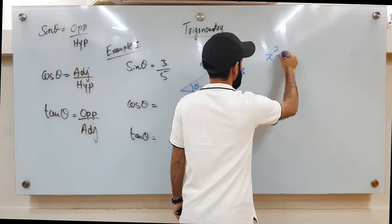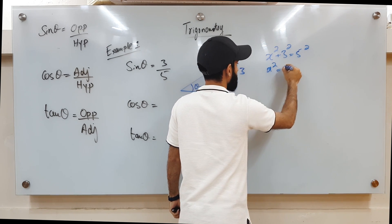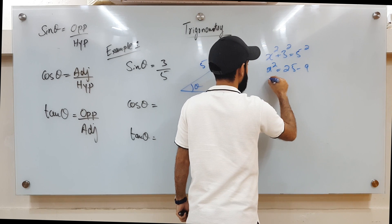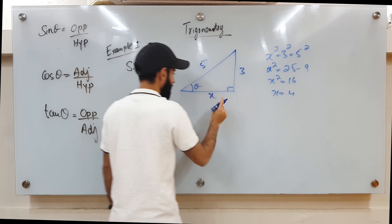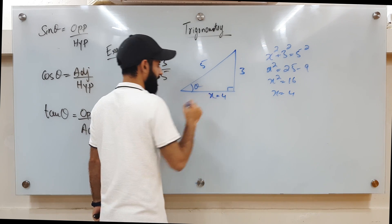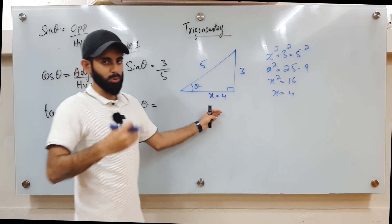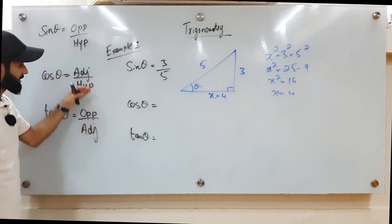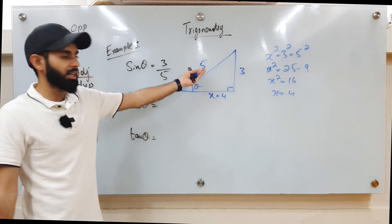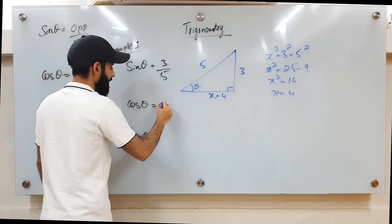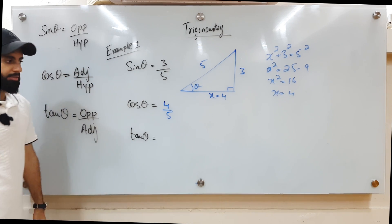So x² + 3² = 5², which gives x² = 25 − 9 = 16, so x = 4 — only positive 4 because we're dealing with length. Now cos theta equals adjacent over hypotenuse, so the adjacent is 4 and the hypotenuse is 5, giving cos theta = 4/5.